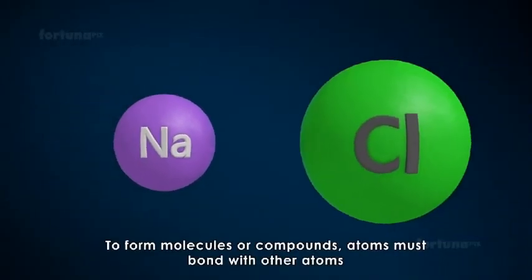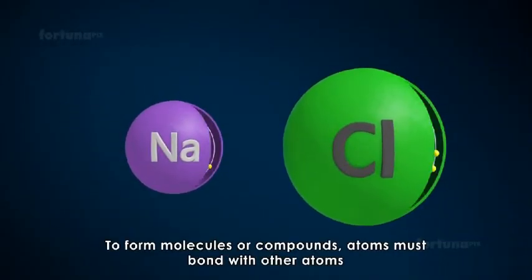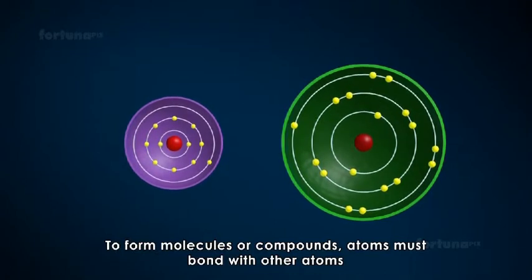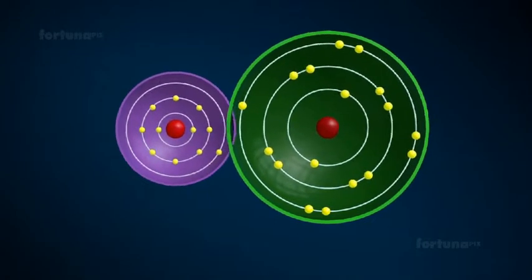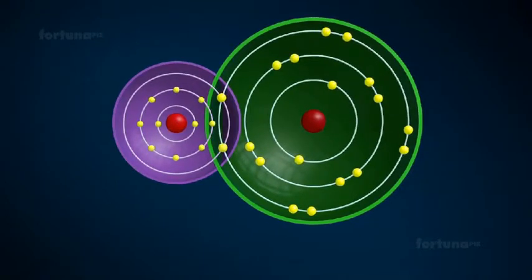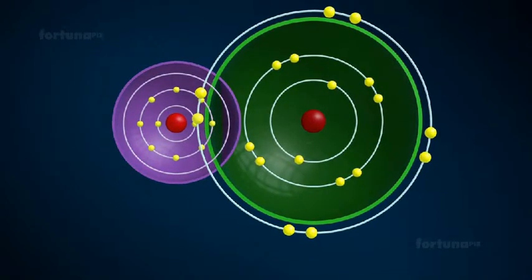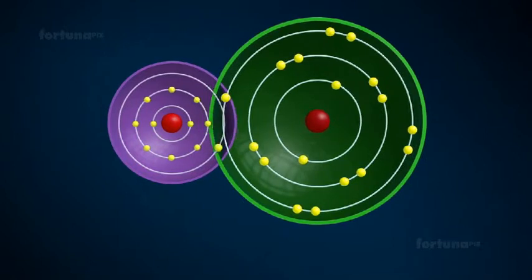To form molecules or compounds, atoms must bond with other atoms. During the bonding process, atoms will try to achieve an outer shell of 8 electrons. This is based on the octet rule.